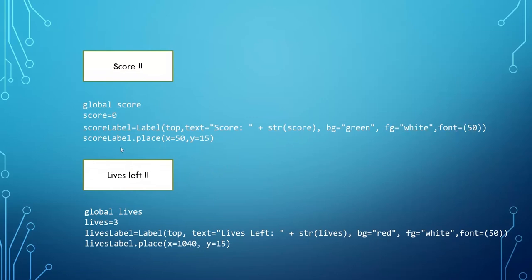We have the same setup for the lives label, showing 'Lives Left' and dealing with the lives variable, but this time with a red background and an x position of 1040.